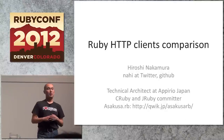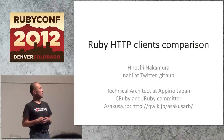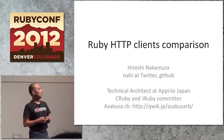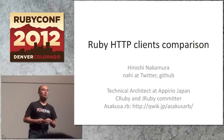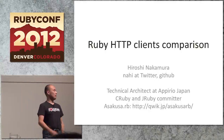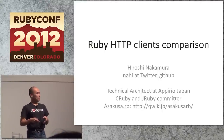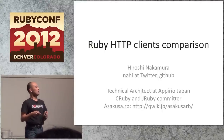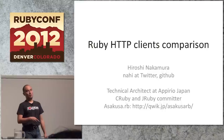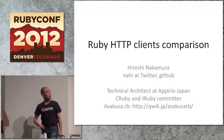Hello, my name is Hiroshi Nakamura, my surname is Nahi at Twitter and GitHub, and I'm working at Appirio doing Shivy and JLV development at my off time. I'm a member of Asakusa.rb. We have a weekly meetup, so when you come to Tokyo, Japan, please join us. You can contact from here.